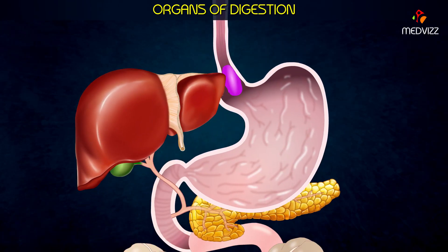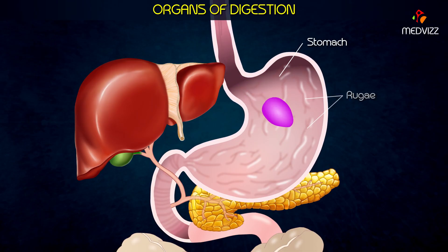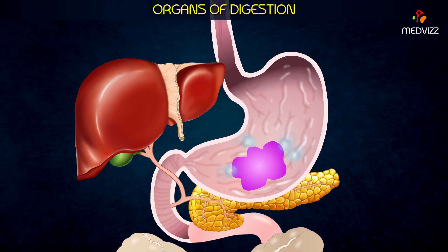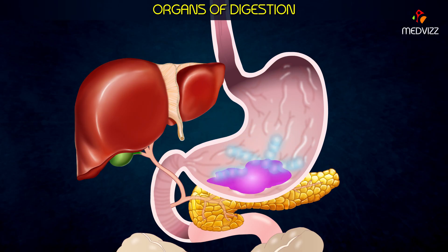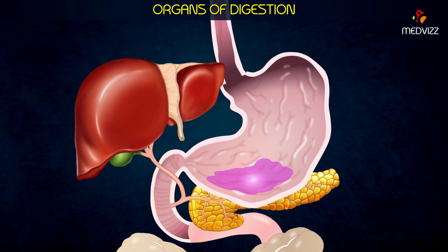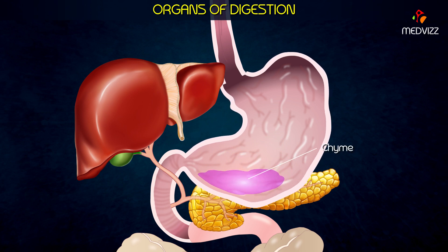The bolus now enters the stomach. Folds in the stomach wall, called rugae, allow for expansion as the stomach fills. Stomach cells secrete hydrochloric acid, pepsinogen, and various regulatory hormones that chemically digest the bolus. Muscular contractions in the stomach churn its contents to further break down the bolus, and mix it with stomach secretions to form a thick liquid called chyme.